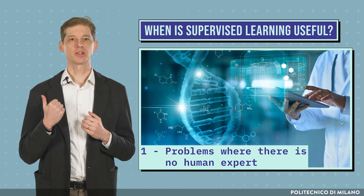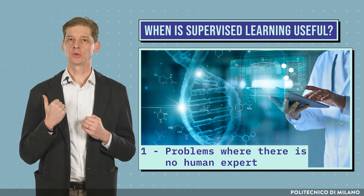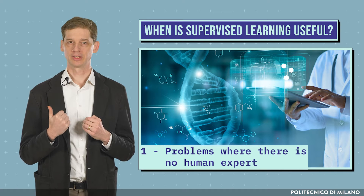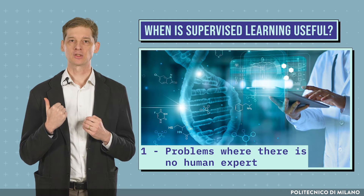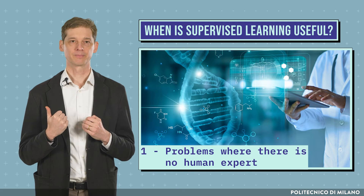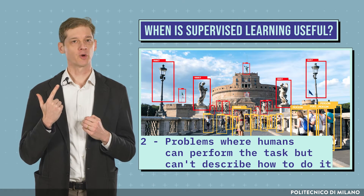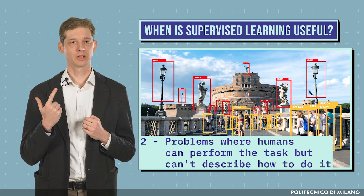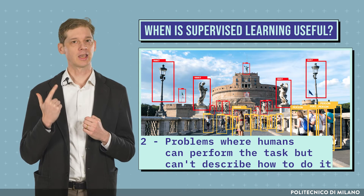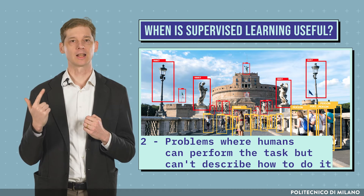First, problems where there is no human expert. If people do not know the answer, they cannot write a program to solve it. This is the case of DNA analysis or drug discovery. Second, problems where humans can perform the task but no one can describe how to do it. This is the case of object detection in images or text analysis.